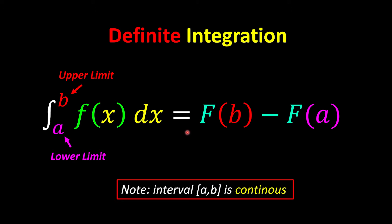That means in between the boundary there must be no holes, no asymptotes, and no jumping around.